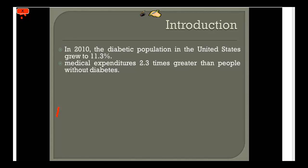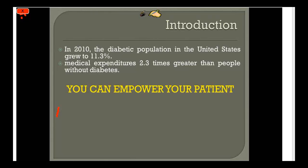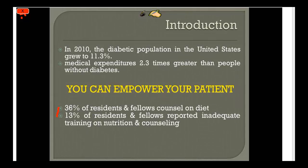Regarding the prevalence of diabetes — this is about empowering your patient to prevent complications. Nutrition is a very important aspect of that, and it's something not a lot of physicians are doing currently. A recent paper showed only 36% of residents and fellows are counseling their patients on diet, and many reported it was because of inadequate training. This is our chance to train you to go into the clinic and teach your patients about nutrition.